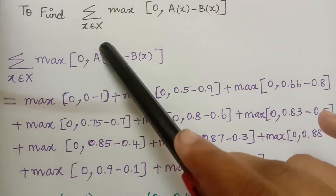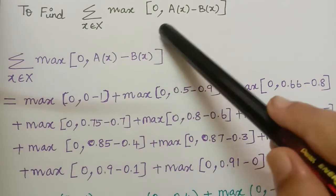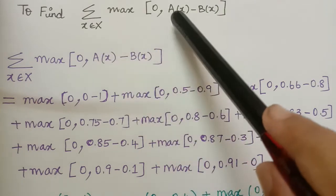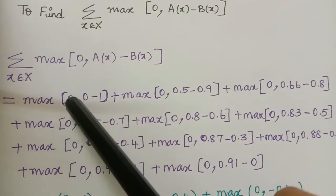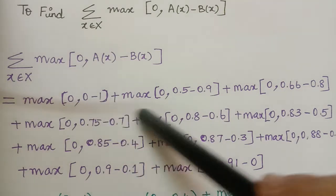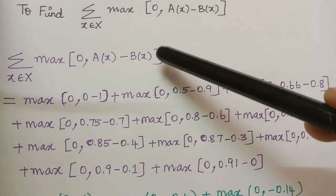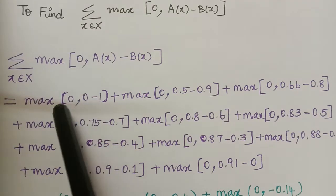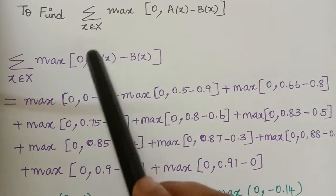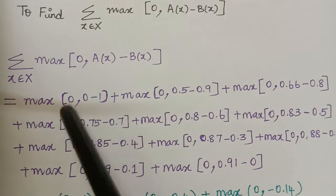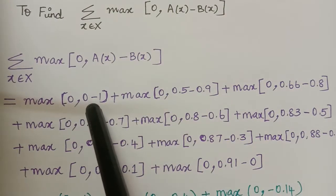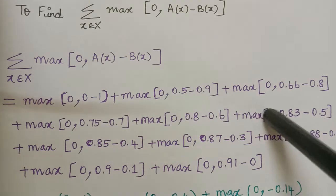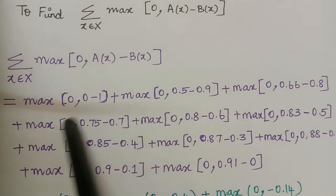Next we have to find the summation over x in X of max(0, A(x) - B(x)). For each value of x from 0 to 10 we find A(x) - B(x), take the maximum of 0 and that difference, then sum all the values. For example, at x = 0: max(0, A(0) - B(0)) = max(0, 0 - 1). In a similar way we have calculated for x = 1, 2, 3, 4, 5, 6, 7, 8, 9, 10 and written the values here.